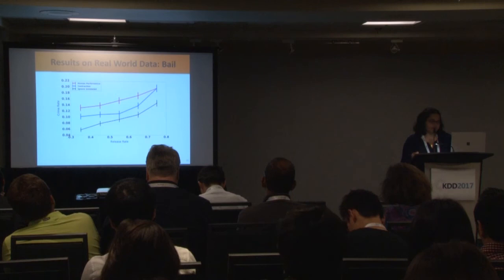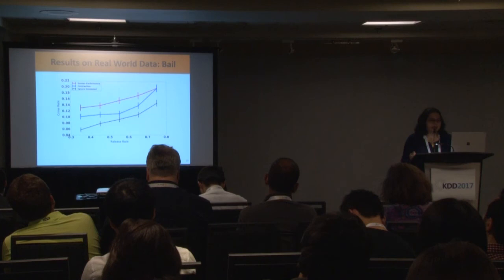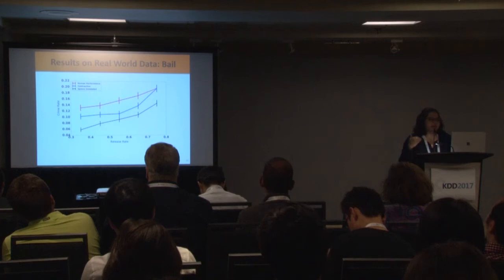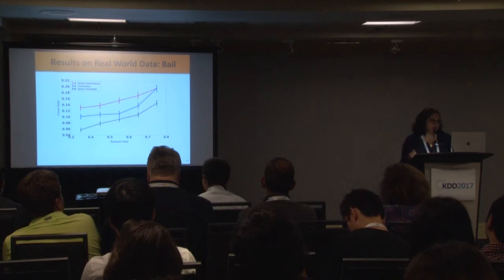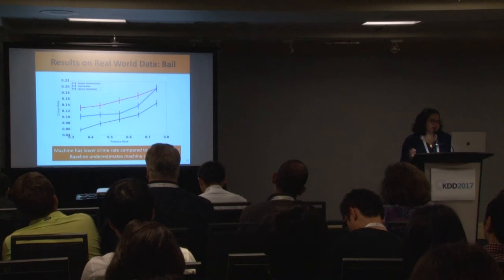The black curve — ignore unlabeled, using only labeled instances — is underestimating the machine's crime rate, meaning it is over-optimistic about how well algorithms are doing. The key insight is that machines have a lower crime rate compared to human judges on this dataset, and the ignore unlabeled baseline further underestimates that machine crime rate.